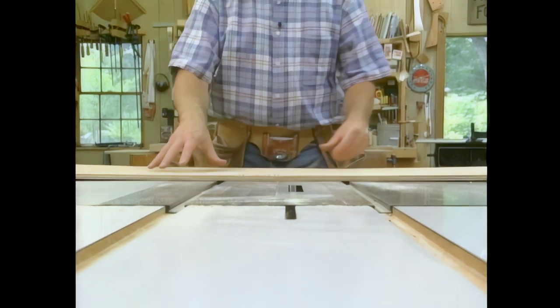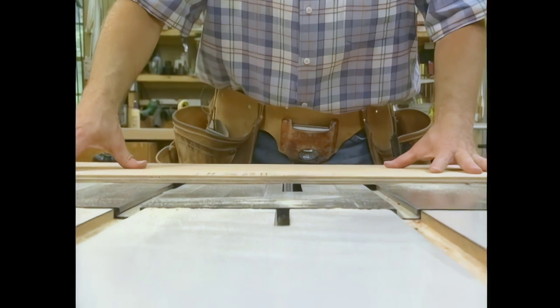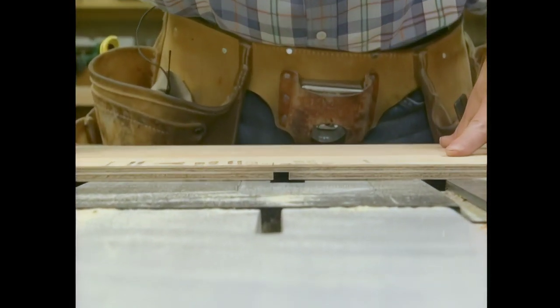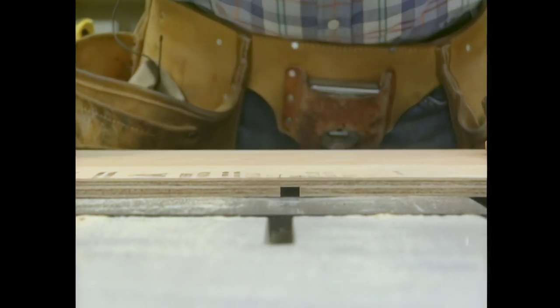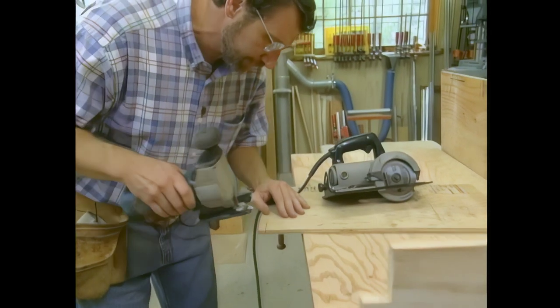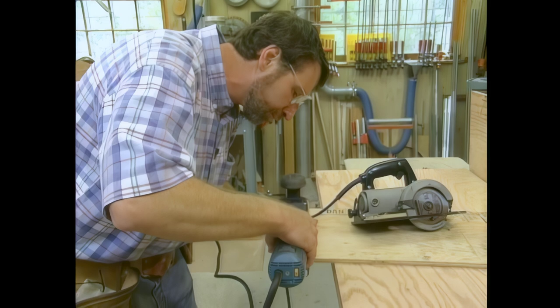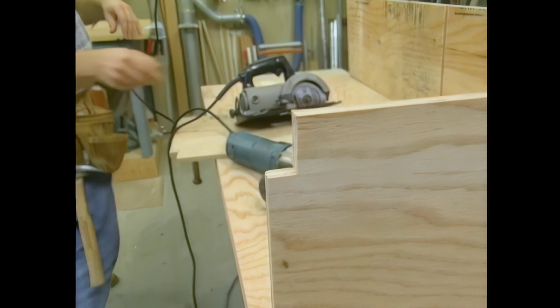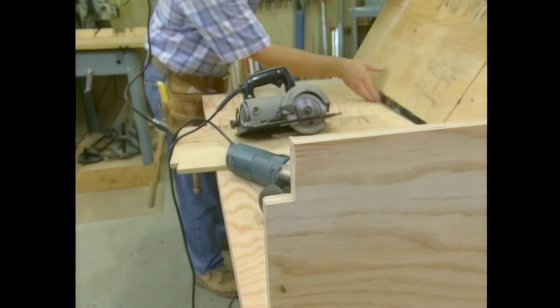While the dado head is still in the table saw, I'm going to go to the opposite side of that back piece and make four dados for the braces that are going to support the outfeed table. Before I can do any assembly, I have to make a few notches in these plywood pieces. And that will allow for the oak trim that I'm going to install on the top piece.